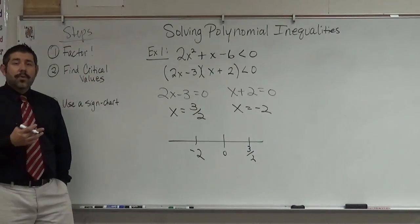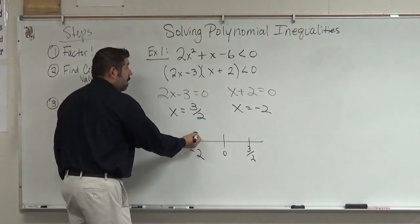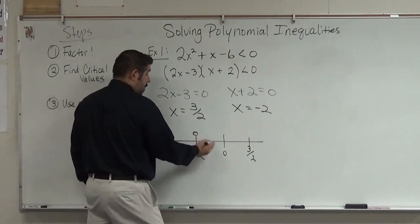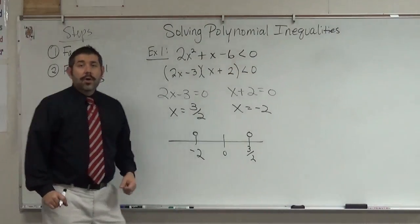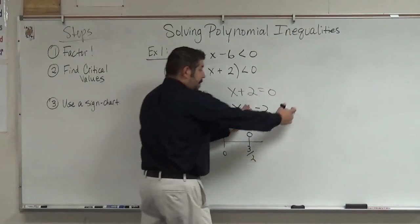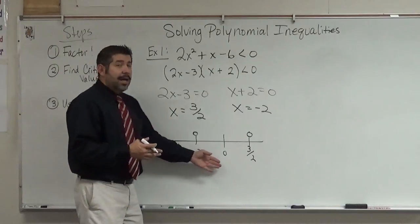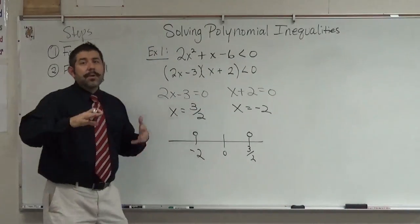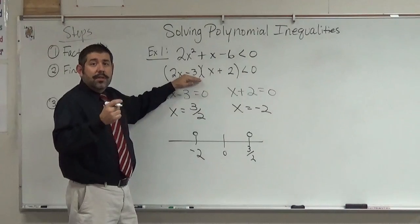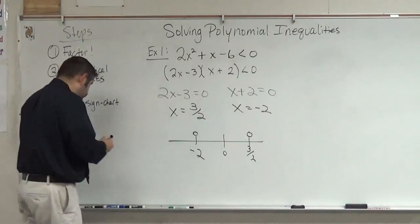What we're going to do on this number line is pick values in between these critical values. I'm going to make open circles because it's a strict less-than. I've got three intervals here. I'm going to pick a value in each interval and plug it in. Some teachers plug the value into the original, but I like to plug it into the factored form because it's a little easier. All you need to figure out is whether this gives you a positive result or a negative result.